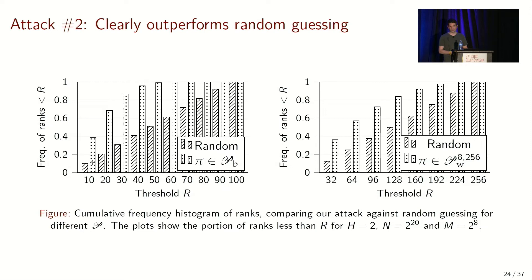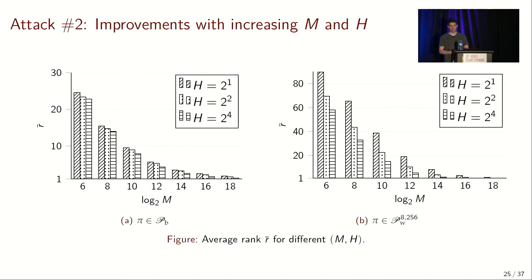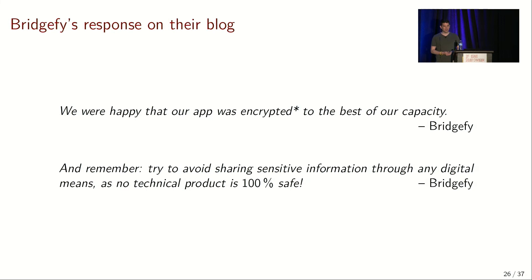We compared our approach against random guessing and clearly outperform it. What we show is the frequency of ranks below a certain number, where rank is the index of the actual payload within our candidate set derived by maximum likelihood estimation — with rank one being the most likely. We also found that when increasing the number of observed messages and the depth at which we track packets in the network, we come very close to an ideal attack where we reliably guess the real payloads.